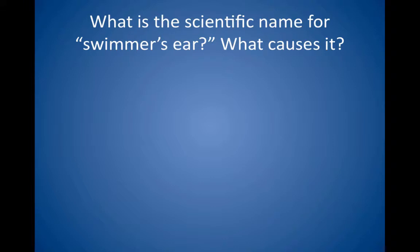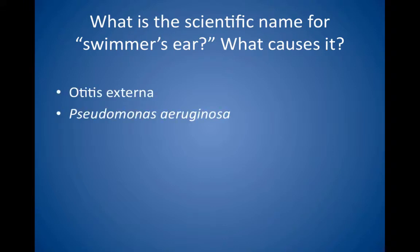What is the scientific name for swimmer's ear? What causes it? Otitis externa, or inflammation of the outer ear, most often is caused by infection with Pseudomonas aeruginosa. Patients have pain with manipulation of the auricle and erythematous swollen skin in the auditory canal. Foul-smelling discharge and conductive hearing loss also may be present. Treat with topical antibiotics such as ofloxacin, neomycin, or polymyxin B, and possibly topical steroids to reduce the swelling.